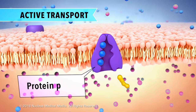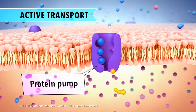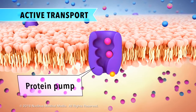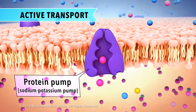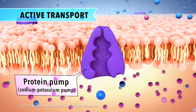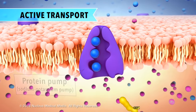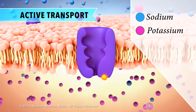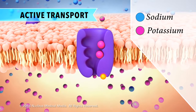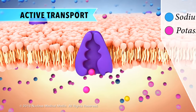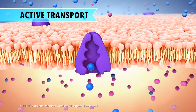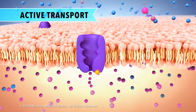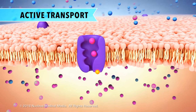Sometimes the cell uses special protein pumps to move small molecules or ions against the concentration gradient into or out of the cell. An example of this is the sodium-potassium pump. In this process, the pump uses energy in the form of ATP molecules to move sodium ions out of the cell and then move potassium ions into the cell. Protein pumps used in active transport require energy because the molecules or ions are moving from an area of low concentration to high concentration.